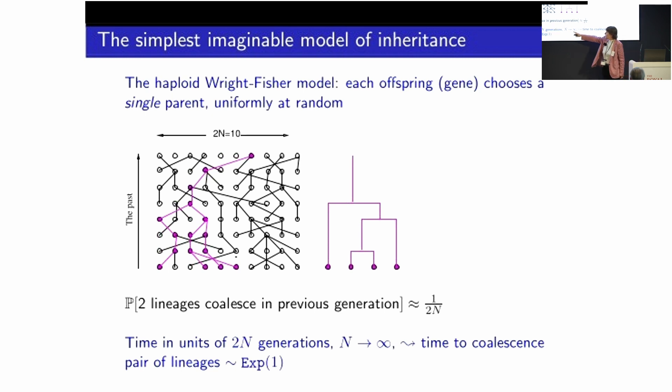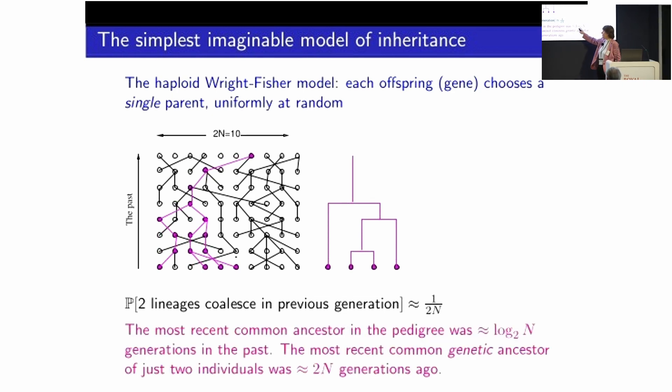And if I measure time in units of 2n generations, then as n tends to infinity, I can think of the time to coalescence as being roughly an exponential 1 random variable. But notice that the most recent common ancestor in the pedigree was log 2n generations ago. And now I've just taken two individuals and I've got to trace back 2n generations. And we said that n was very big. So 2n really is massively bigger than log 2n. The timescales of genetics are much, much longer than the timescales of those family trees that you see on stately home walls.